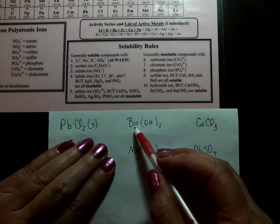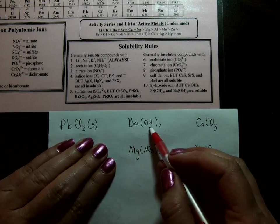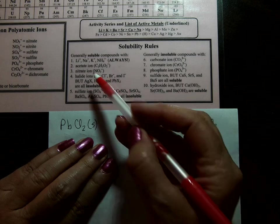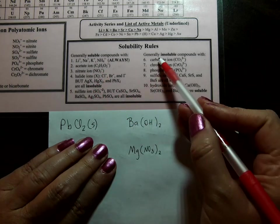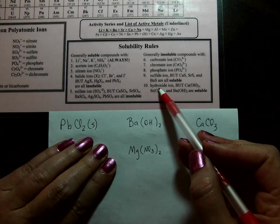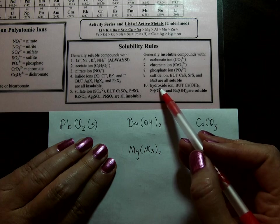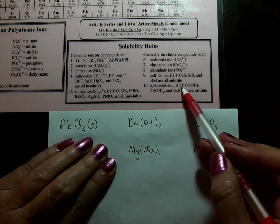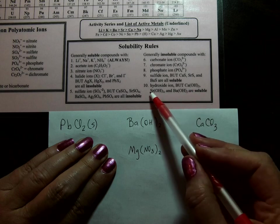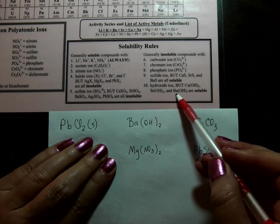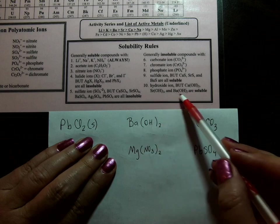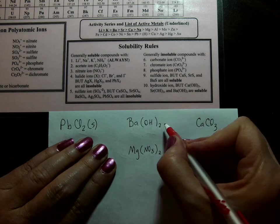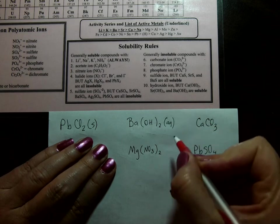Barium hydroxide. We are looking for barium or hydroxide, whichever we come to first. Hydroxide is rule number 10. Hydroxide compounds are generally insoluble unless it's with calcium, strontium, or barium. We have barium. So it is soluble. So it gets an AQ. Soluble.